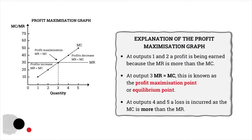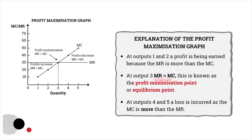I've got it all neatly typed up, so let me recap and summarize. At quantities 1 and 2, my marginal revenue exceeds my marginal cost, and that means that a profit is being earned. At quantity 3, known as my profit maximization point — alternatively the equilibrium point — it occurs where your marginal revenue is equal to your marginal costs. At quantities 4 and 5, my marginal costs exceed my marginal revenue, and that means that a loss is incurred.